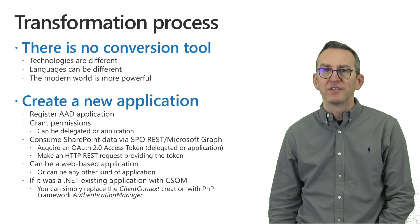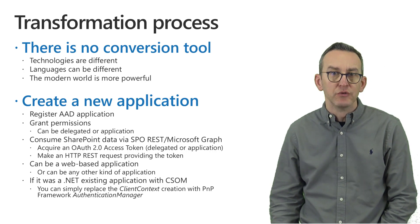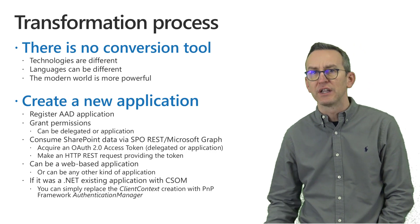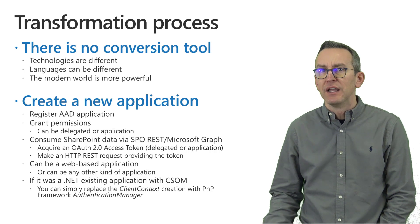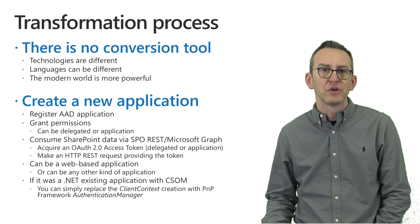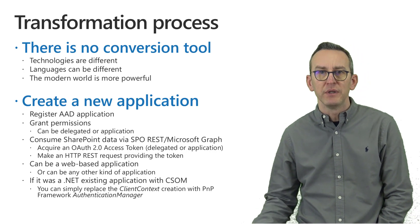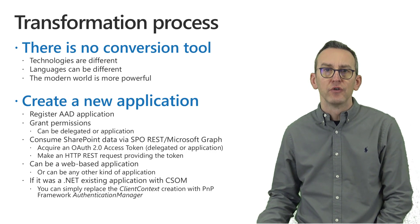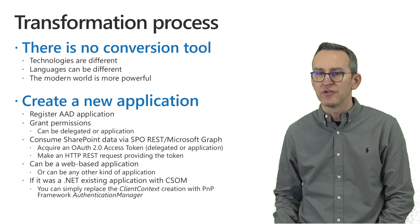From a transformation process point of view, there is no conversion tool to easily upgrade a provider-hosted application to an Azure Active Directory registered application. But at the same time it is quite an easy journey — you simply need to register an application in Azure AD and grant proper permissions to that application, which can eventually be based on resource-specific consent so that you can target just specific site collections for your application.